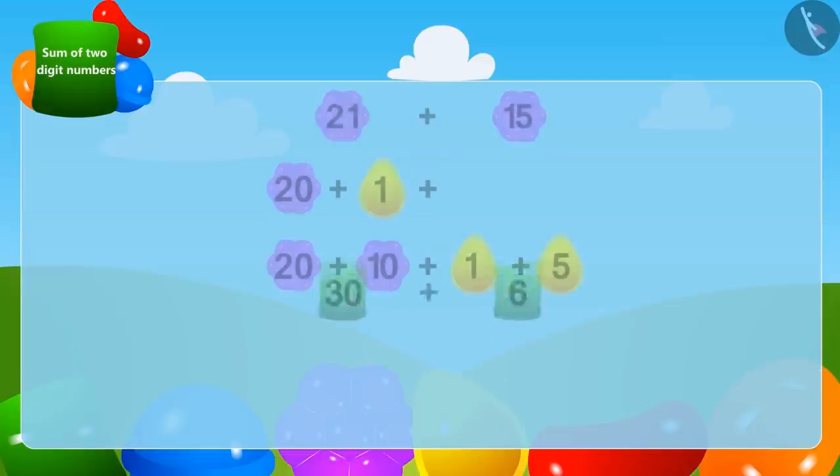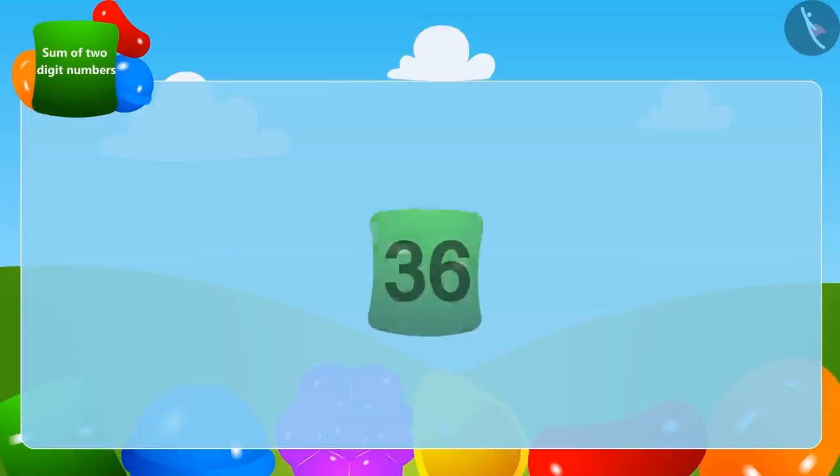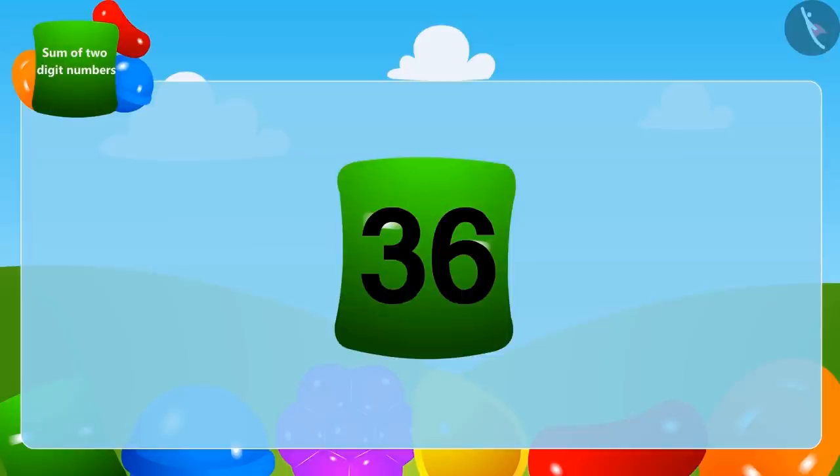Finally, adding 30 plus 6 gives us 36. Oh yes, the crow has collected a total of 36 stones.